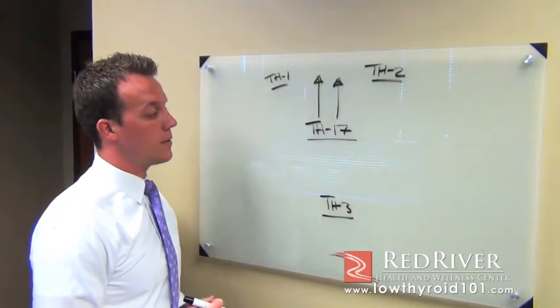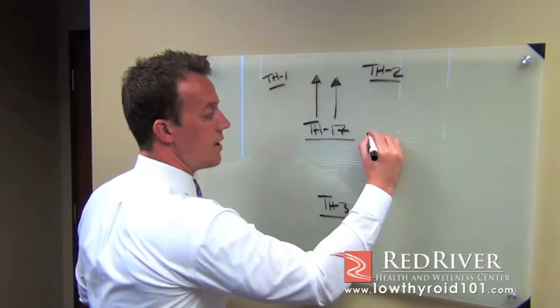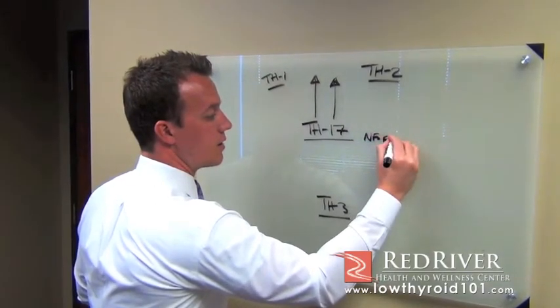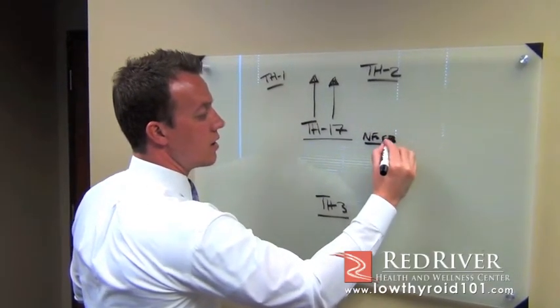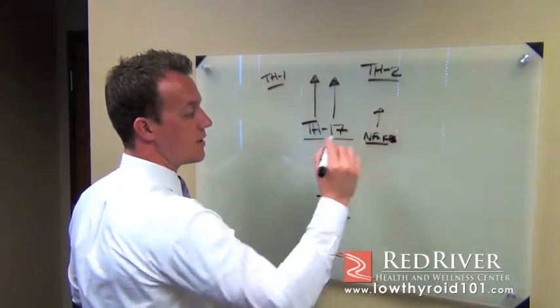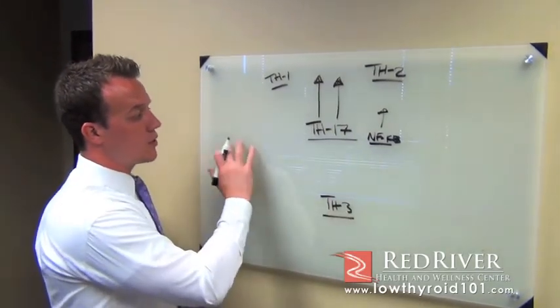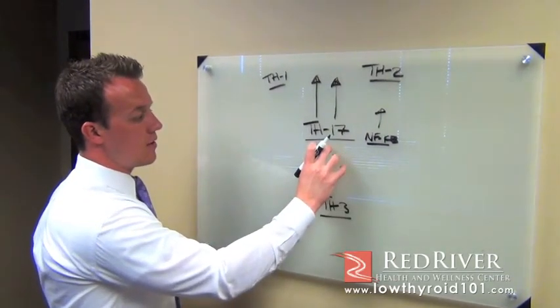Another thing that we worry about when this occurs is what's called NF kappa beta. Same process will occur. When this increases, this will increase and cause a lot more problems with the whole body.